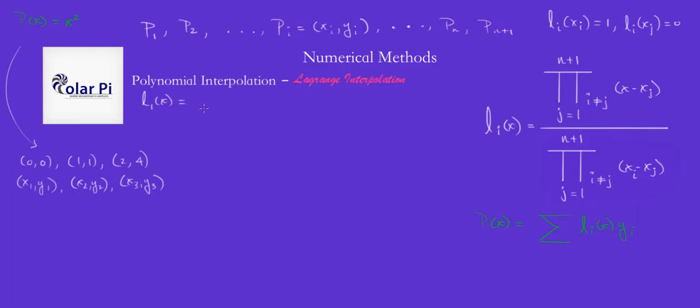All right. So cool. So what does L1 look like? L1 is going to be X minus X2, do you see how, times X minus X3? Do you see how I skipped X minus X1?